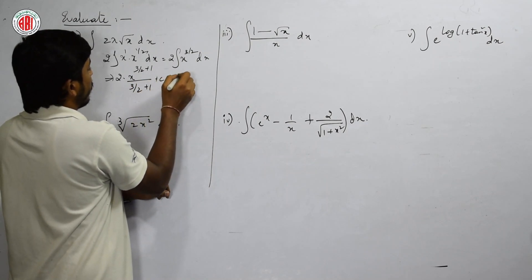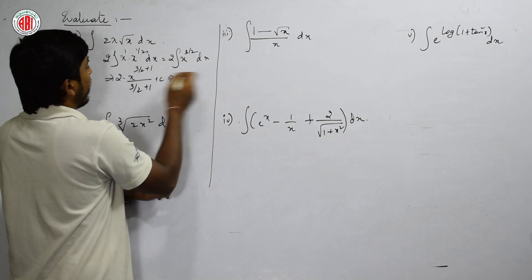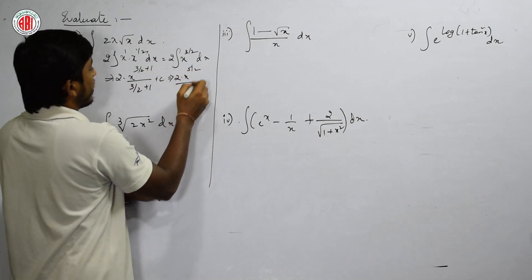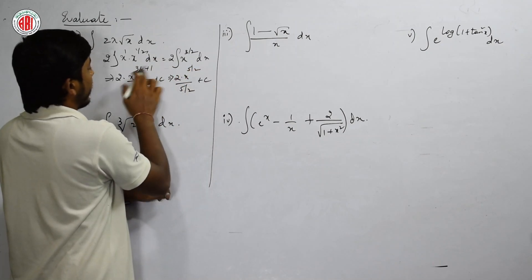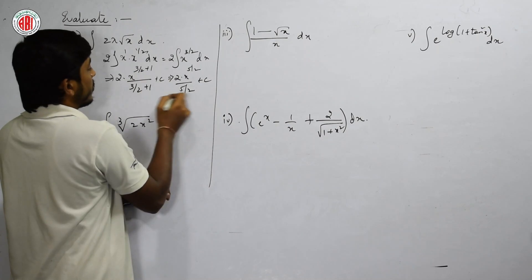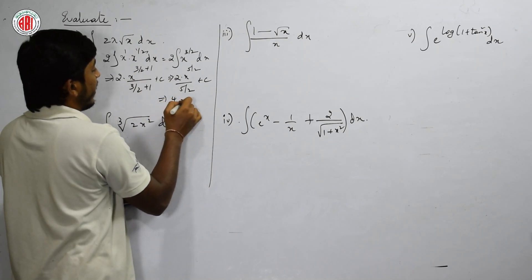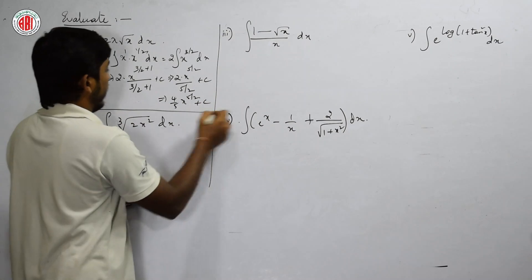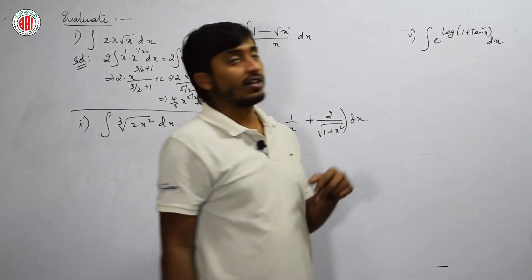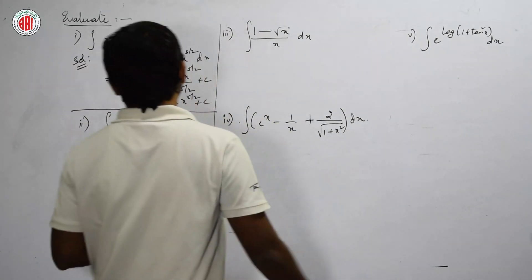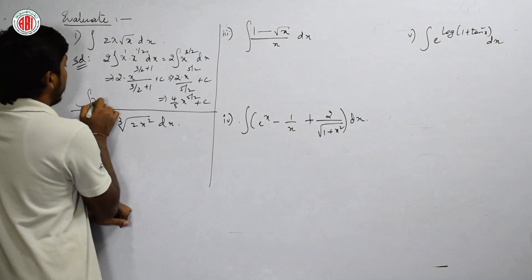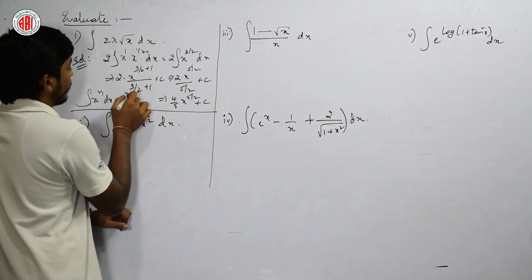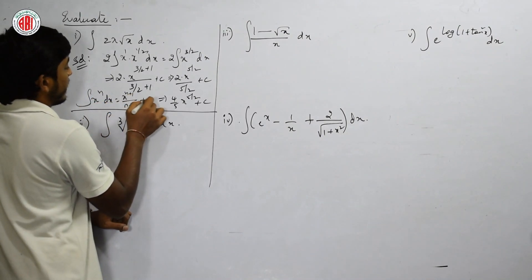The answer will be 2 · x^(n+1)/(n+1). Here n = 3/2, so n+1 = 5/2. The answer is 2 · x^(5/2) / (5/2) = 4/5 · x^(5/2) + c. The formula used is: ∫x^n dx = x^(n+1)/(n+1) + c.